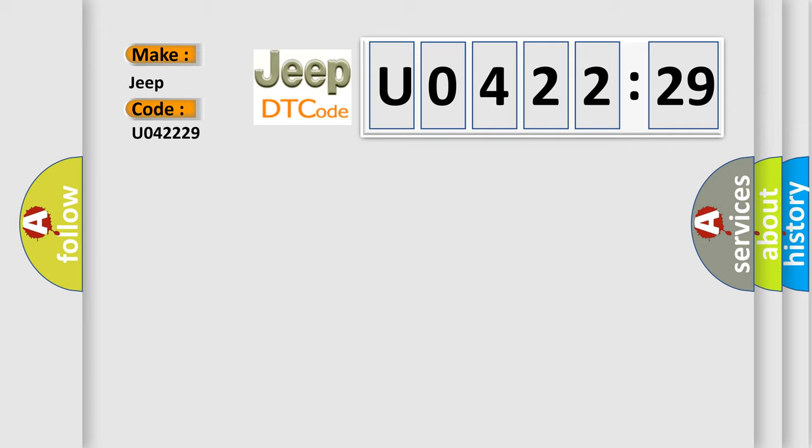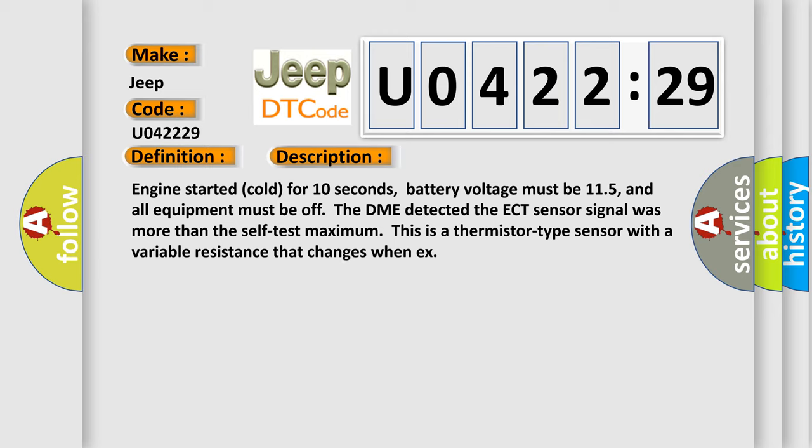The basic definition is: ECT sensor two circuit high input. And now this is a short description of this DTC code. Engine started cold for 10 seconds, battery voltage must be 11.5V, and all equipment must be off. The DME detected the ECT sensor signal was more than the self-test maximum. This is a thermistor type sensor with a variable resistance that changes with temperature.